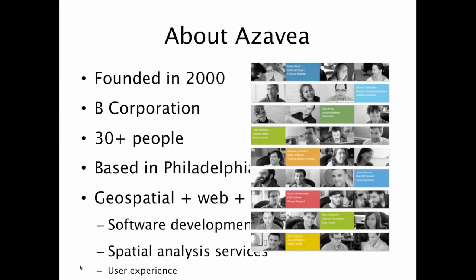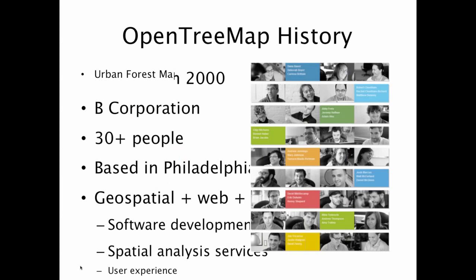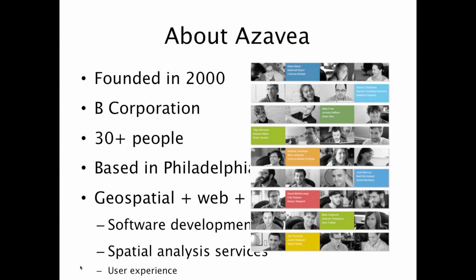I wanted to give a brief background about Azavea. We're a small family-owned software company founded in 2000. We're known as a B Corporation, which means we focus on projects that have social value to the community — using technology for the good of all people. We want to take on projects that are intellectually stimulating. We do primarily geospatial and web development, we're based in Philadelphia, and we're about 30 people.